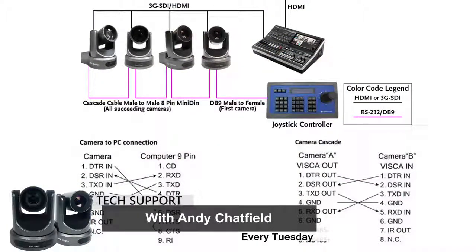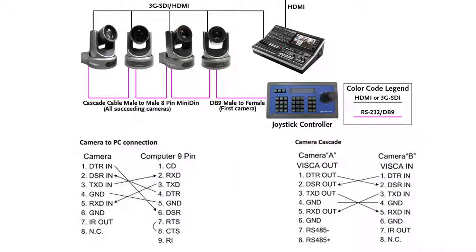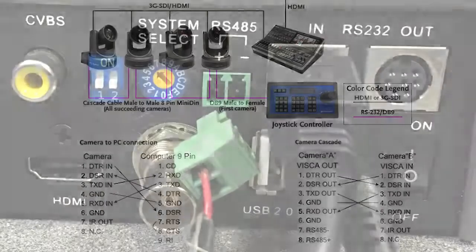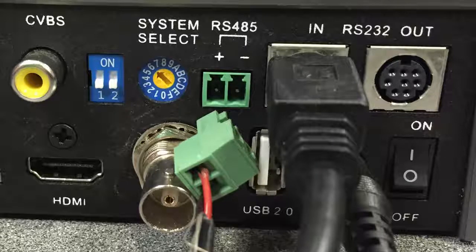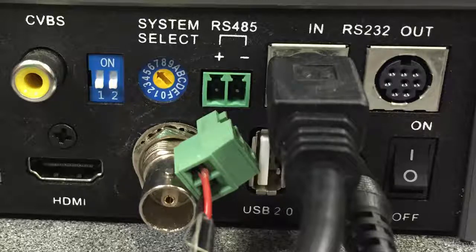For cascading cameras with RS-485, you would use the same type of cable. You just get another piece of cable and go directly into the two-pin connector on the back of the camera. Put two cables in there instead of one — one set going back to the joystick and the next set going to camera two. As long as you ID the cameras correctly, you'll have no issues. This is very easy to do and you don't have to buy proprietary cables like RS-232 requires.